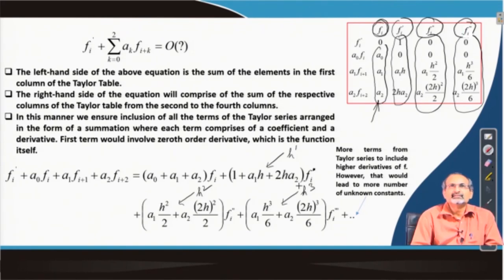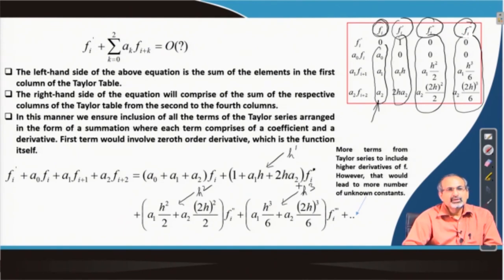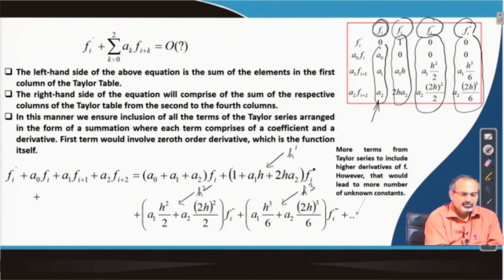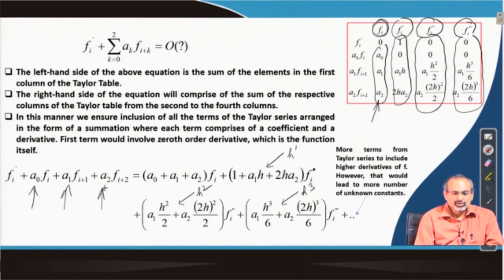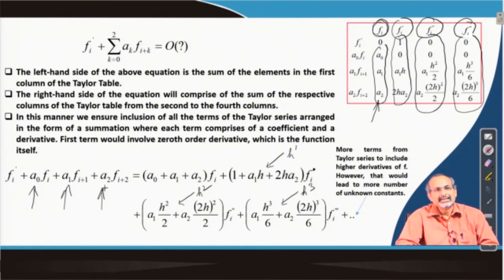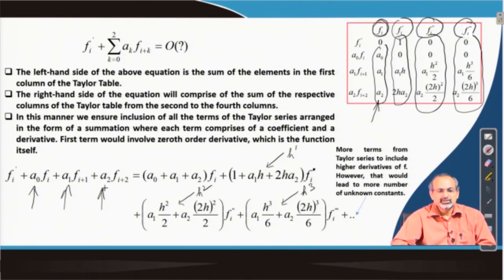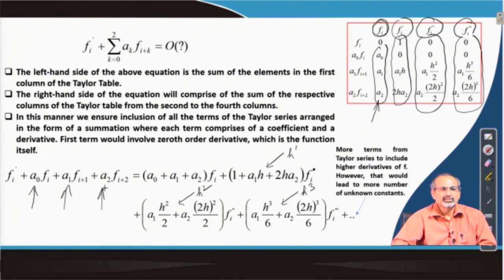How many bracketed terms can we actually set to zero? That will be answered by how many unknowns we have on the left-hand side. We have three unknowns: a naught, a 1, and a 2. So we can set precisely three bracketed terms to zero on the right-hand side, which yields three independent linear algebraic equations. These can be simultaneously solved to obtain the values of a naught, a 1, and a 2, which will set all three bracketed terms to zero and give you the highest possible order of accuracy for this stencil.